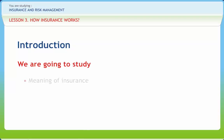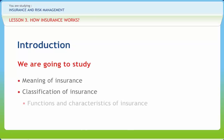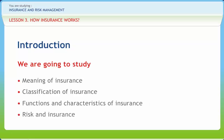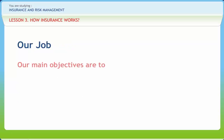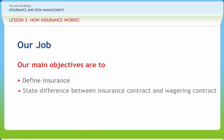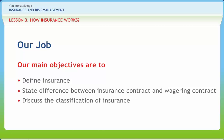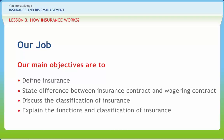In this lesson, we will study the Meaning of Insurance, Classification of Insurance, Functions and Characteristics of Insurance, and Risk and Insurance. After going through this presentation, you should be able to define insurance, state the difference between insurance contract and wagering contract, discuss the classification of insurance, and explain the functions and classifications of insurance and marketing of insurance.